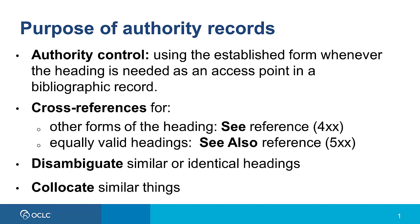Authority records also disambiguate similar or identical headings, for example by providing additional information about a name, such as a middle name or dates. Finally, authority records help to collocate or bring together similar things. For example, authority records for uniform titles help bring various manifestations of a work together that otherwise may bear different individual titles. I'll show examples of each of these in the upcoming slides.